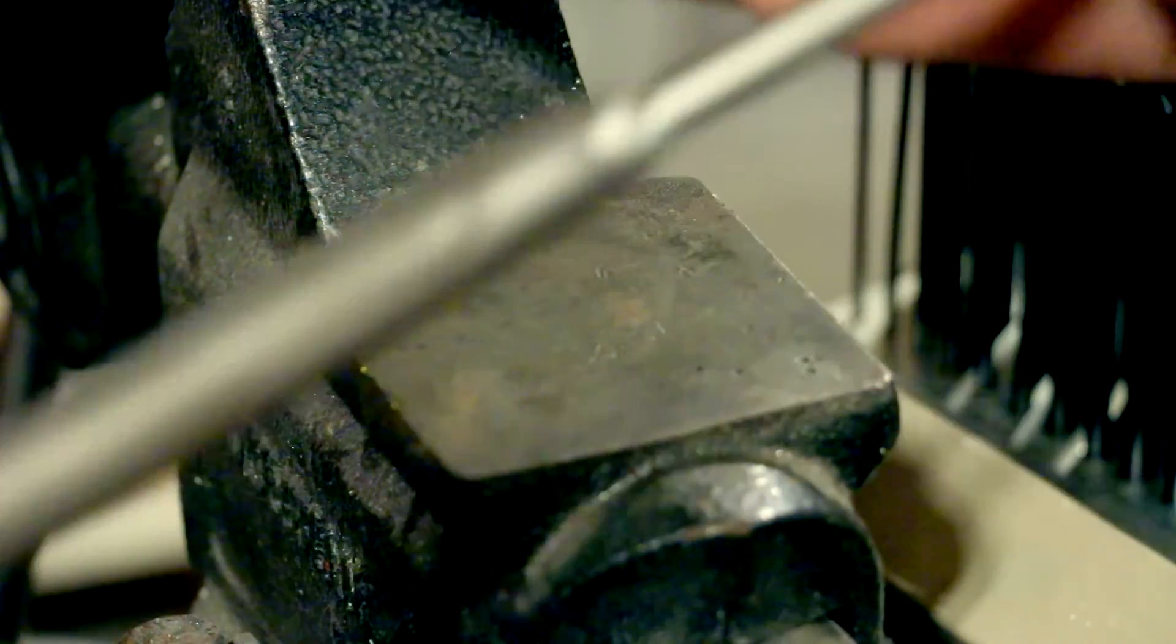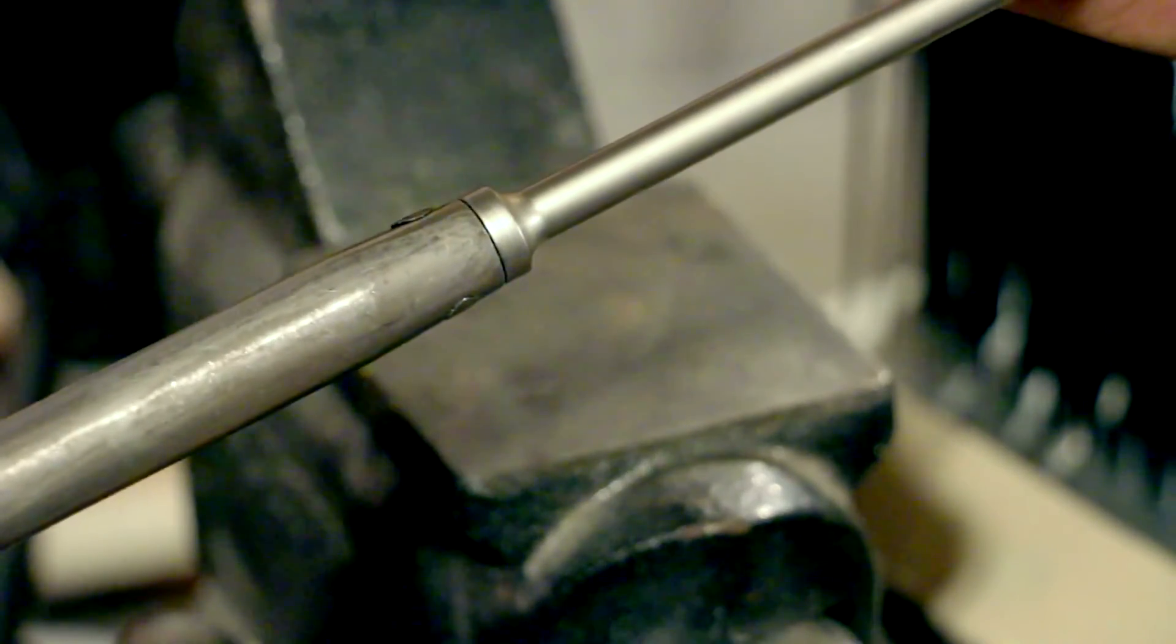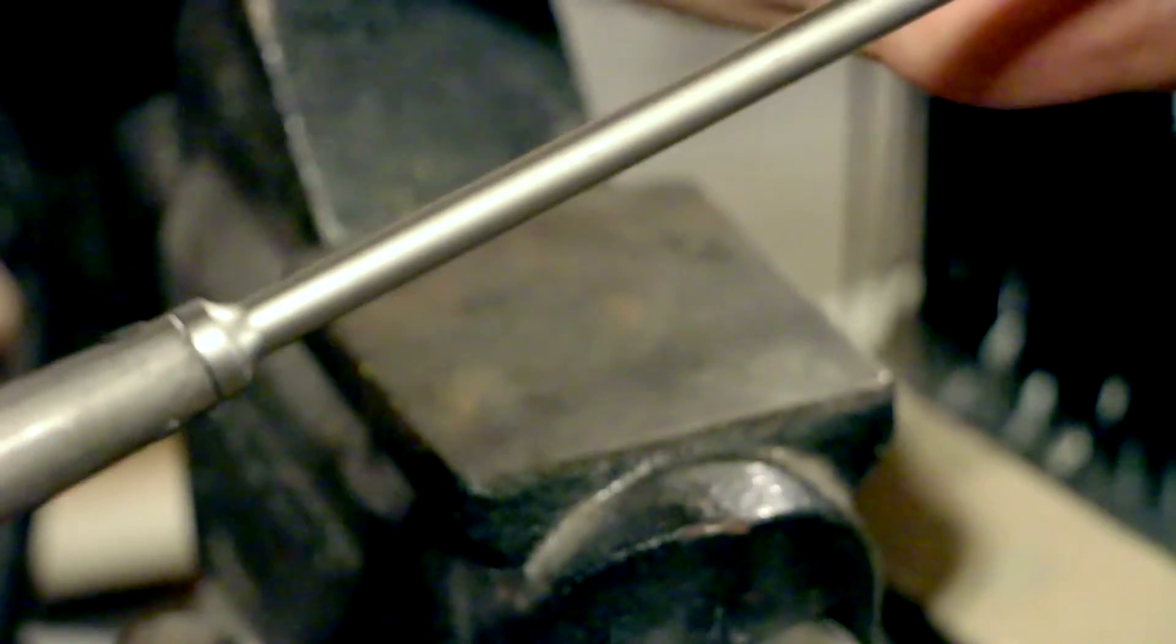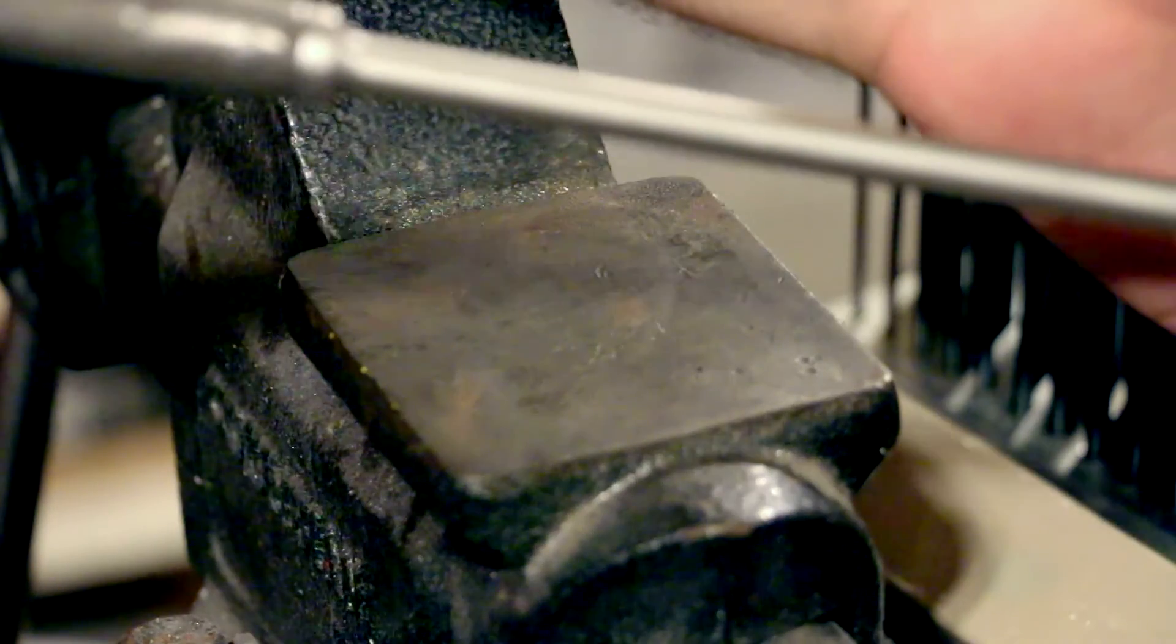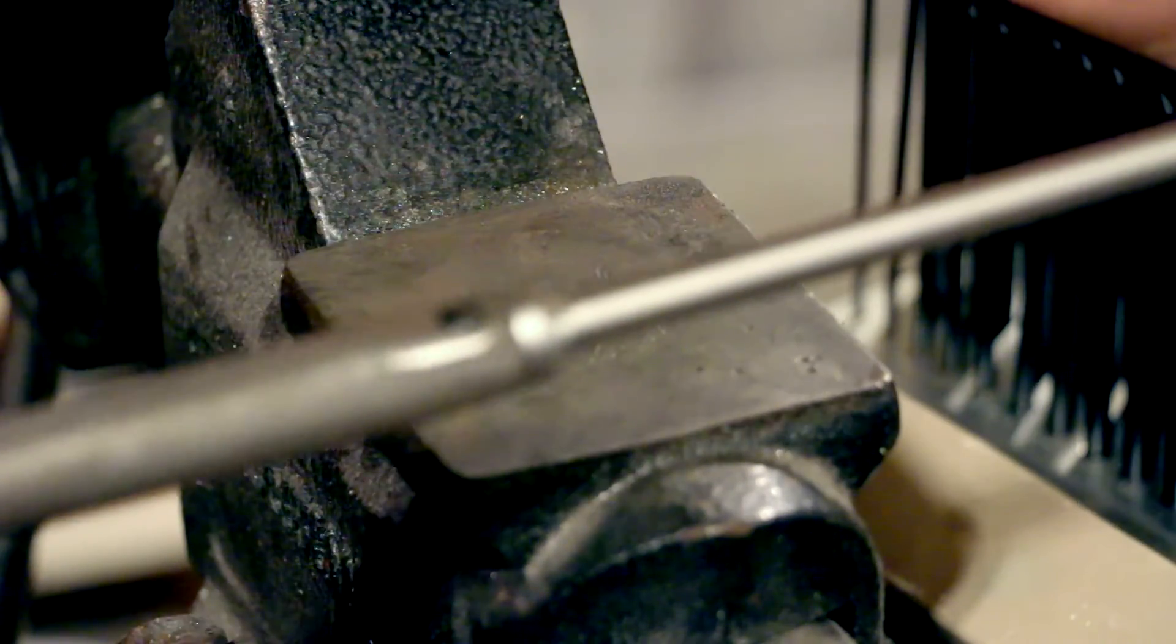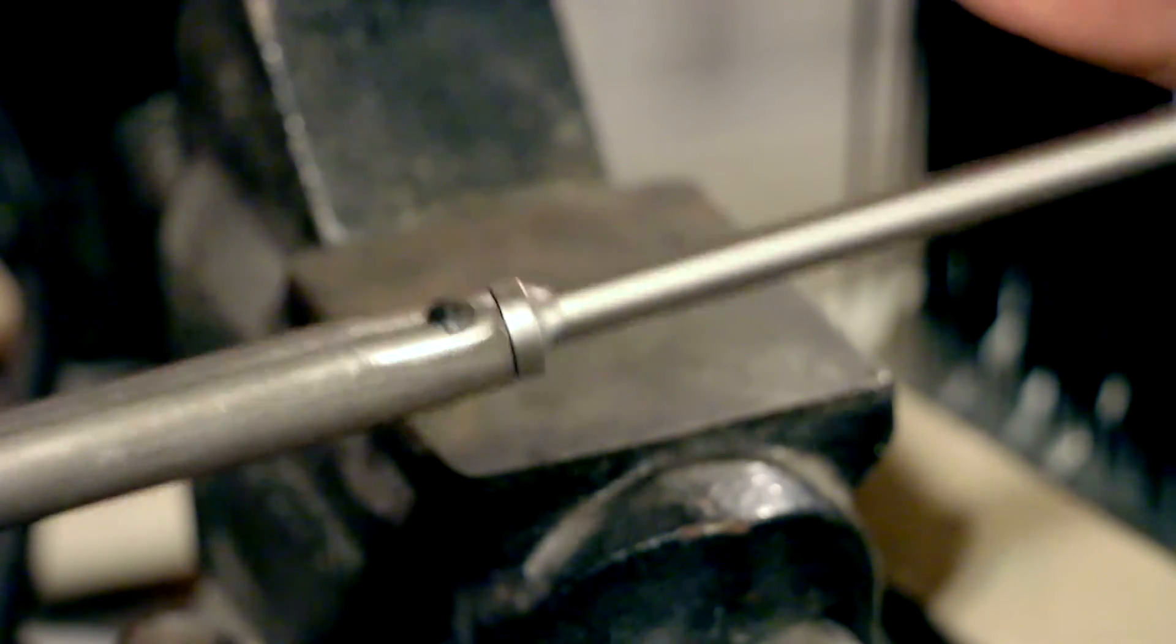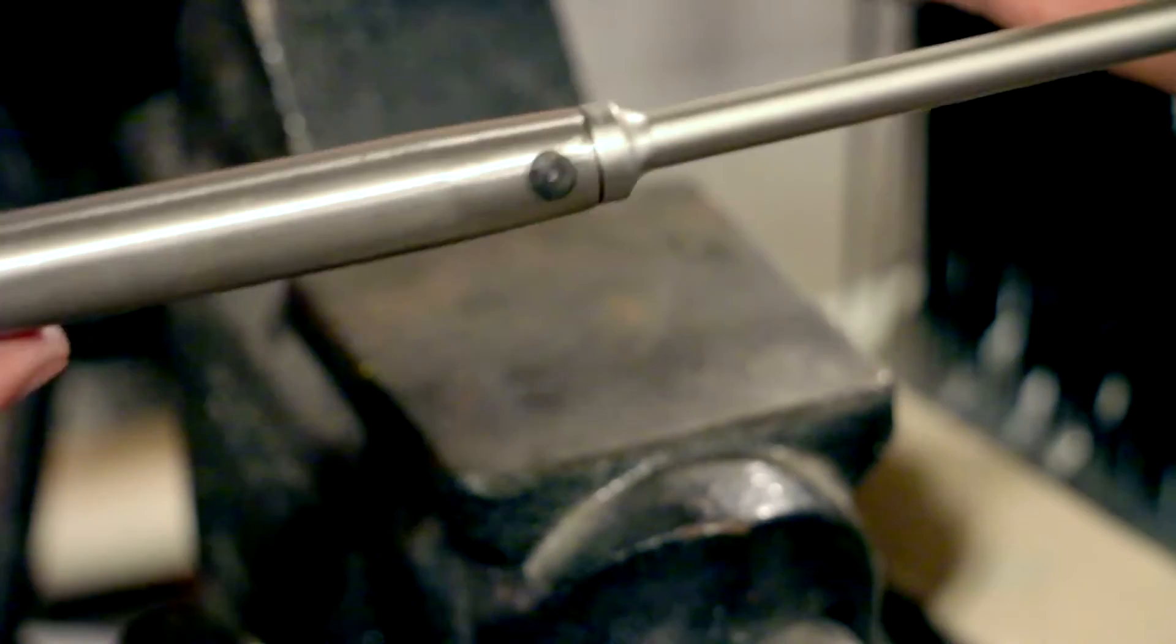And one thing to keep in mind is something that happened with this one - once you peen this down, sometimes that wobble I was talking about will go away, like it did with this one. The wobble's gone. I've found that after shooting like a mag or two, it will come back. If it doesn't, which has happened to me too sometimes, it's okay.